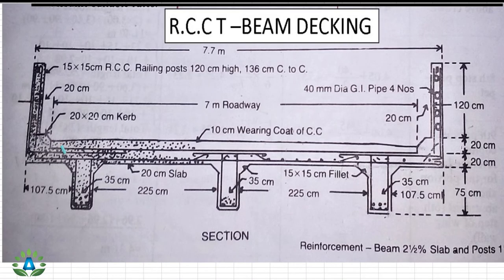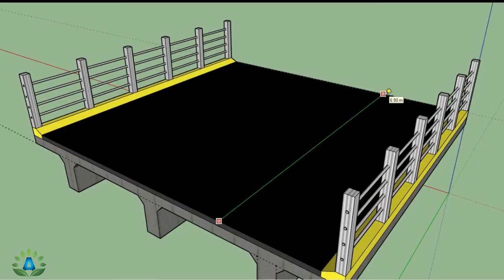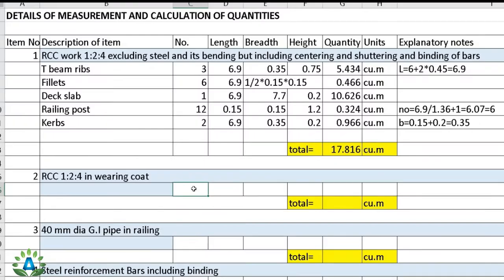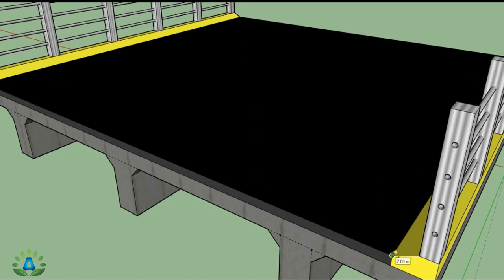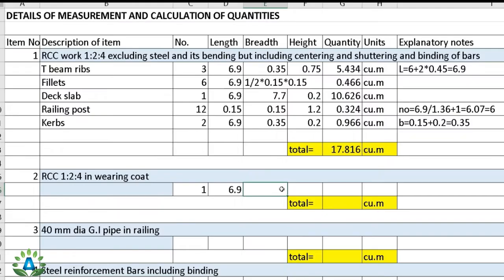Next is the RCC wearing coat of mix 1:2:4. It is 10 cm thick and laid only over the 7-meter roadway for the full 6.9-meter span. With number = 1, length = 6.9 m, width = 7 m, and height = 0.1 m, the total quantity is 4.83 cubic meters.